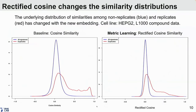To give a little intuition, this is how the embedding has changed the similarity distribution. On the left, you have cosine similarity of compound signatures in HEPG2, which is a liver cell line from L1000, where replicate similarities are in red and non-replicates are in blue. On the right, you have the learned metric — the rectified cosine — after doing the embedding. As you can see, the distribution is shifted somewhat.